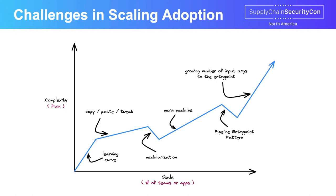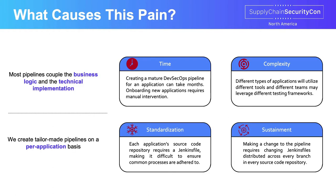The TLDR is that the more teams you're trying to have adopt DevSecOps, the more pain your organization is going to feel. The root of this pain is that every CI/CD tool in the industry today is focused on how to build a DevSecOps pipeline for one team, one application. That often means you define your CI/CD pipeline as code inside each and every source code repository — and that by itself, from a software supply chain perspective, poses issues.